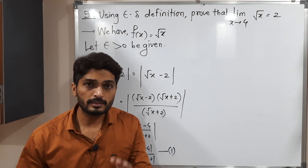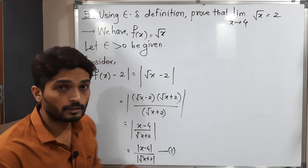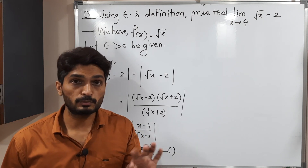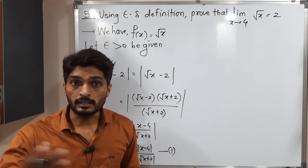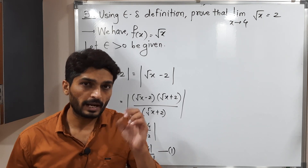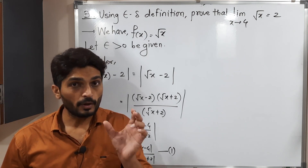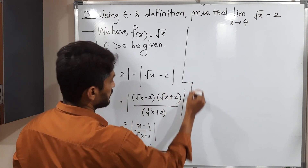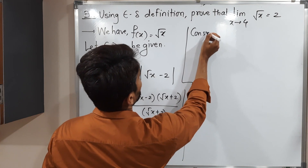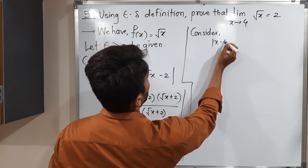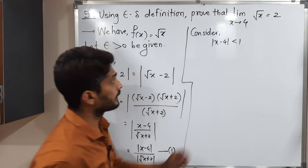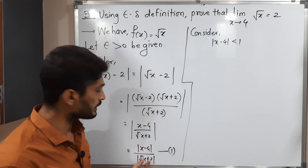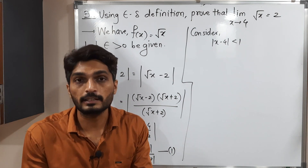This is not a simple regular problem, since we have x in both the numerator and denominator. So you cannot find a direct relation between epsilon and delta. As in our previous video, we need to do some adjustment. That means initially we consider |x - 4| < 1, so that we can bound the denominator by a fixed constant.